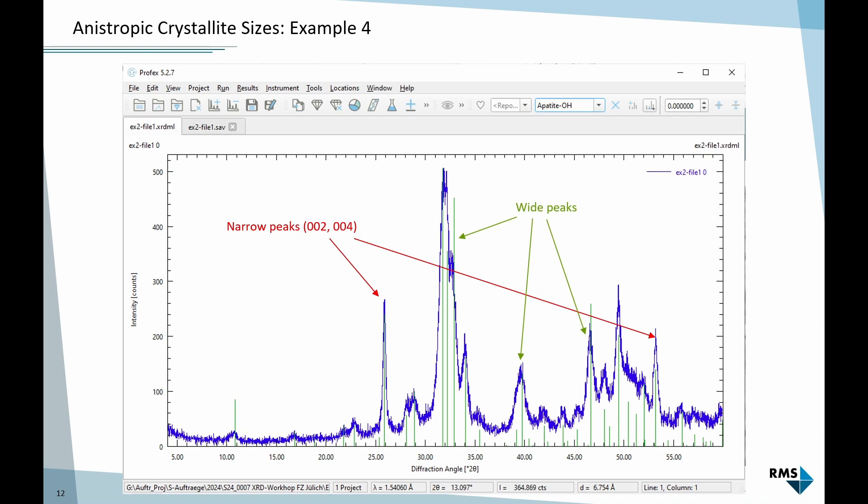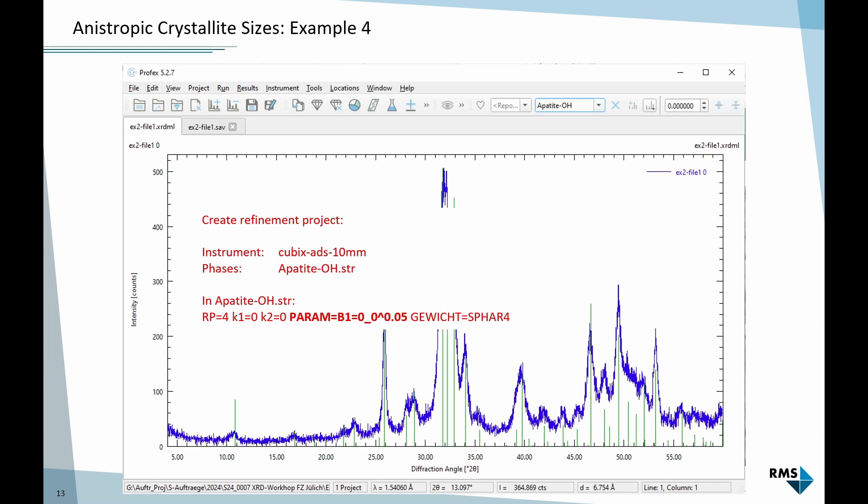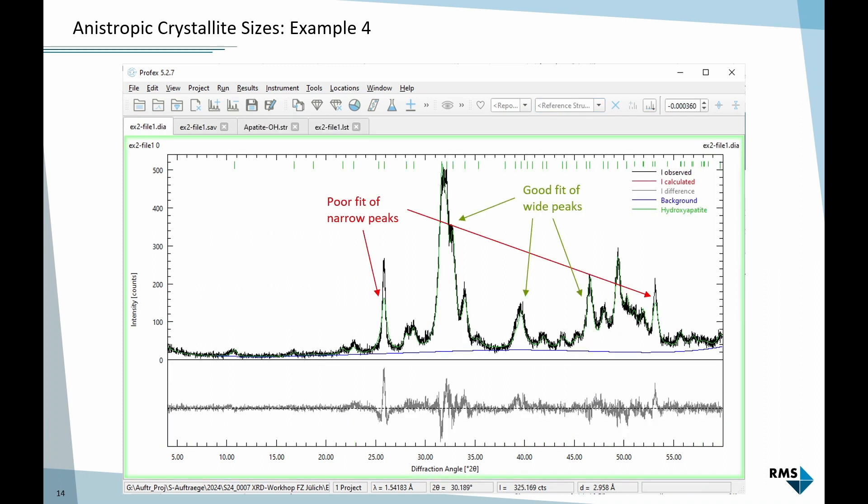The way this shows in the diffraction pattern is that some peaks are narrow and others are wide. If we only fit this with one value for peak broadening through the B1 parameter, as I'm showing here, we will not get a very good fit. Here the wide peaks dominate, and this means it cannot really fit the narrow peaks. So we get a strong signal in the difference curve of the peaks coming from the C axis. This is apatite which grows in needles along the C axis, and these 002 and 004 peaks don't fit very well.